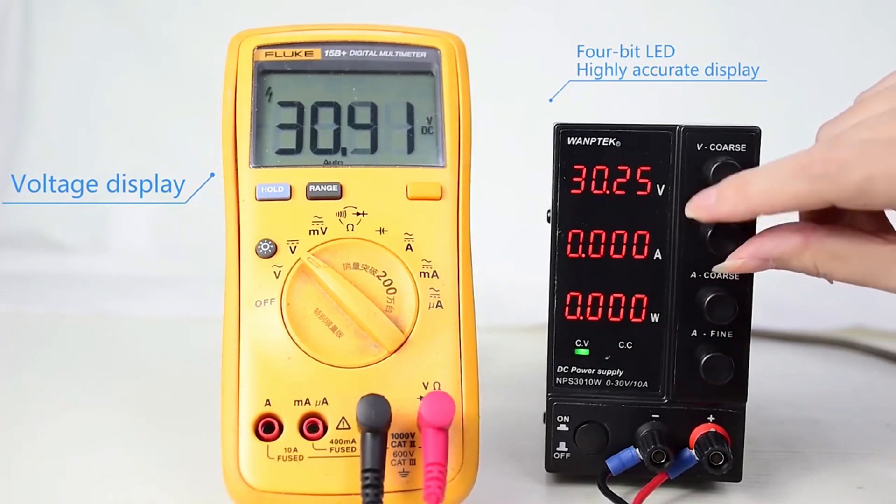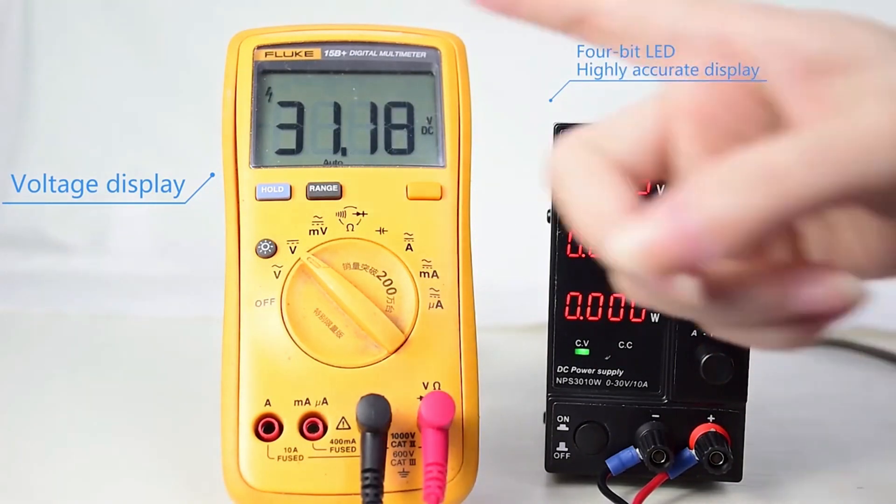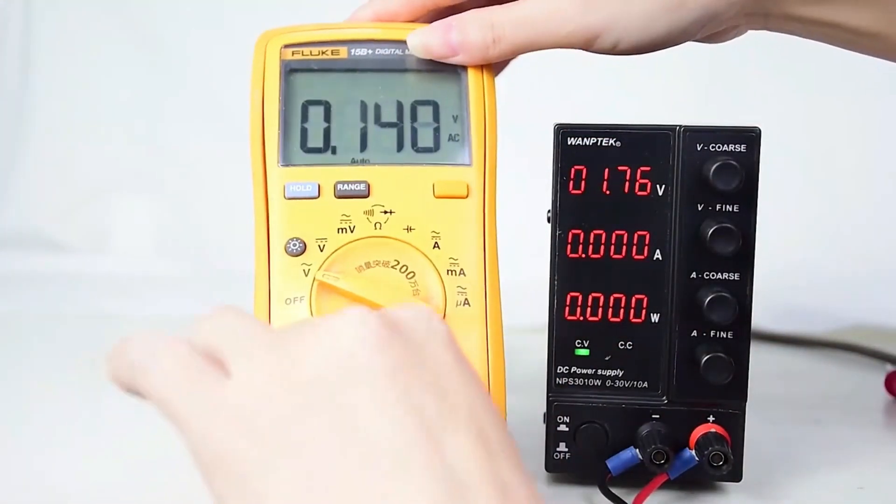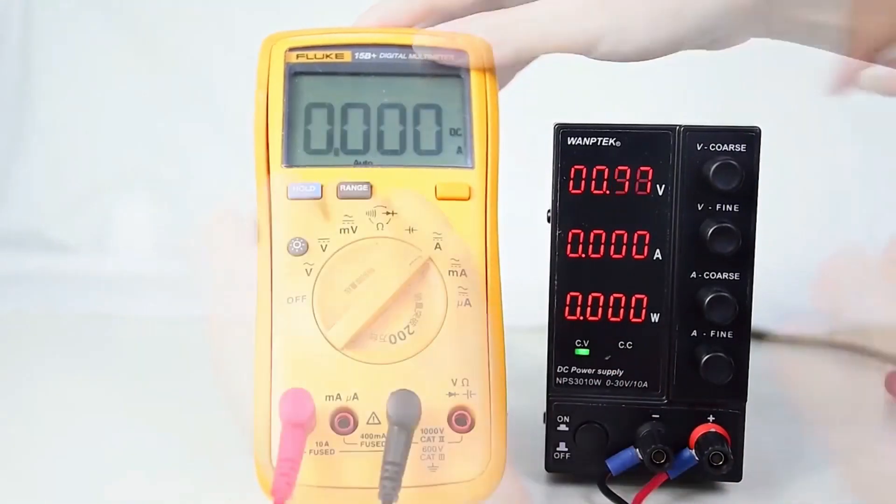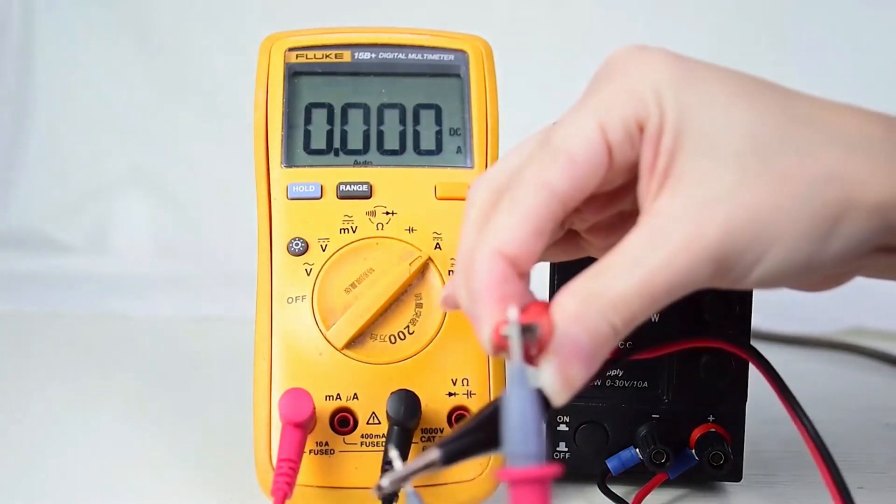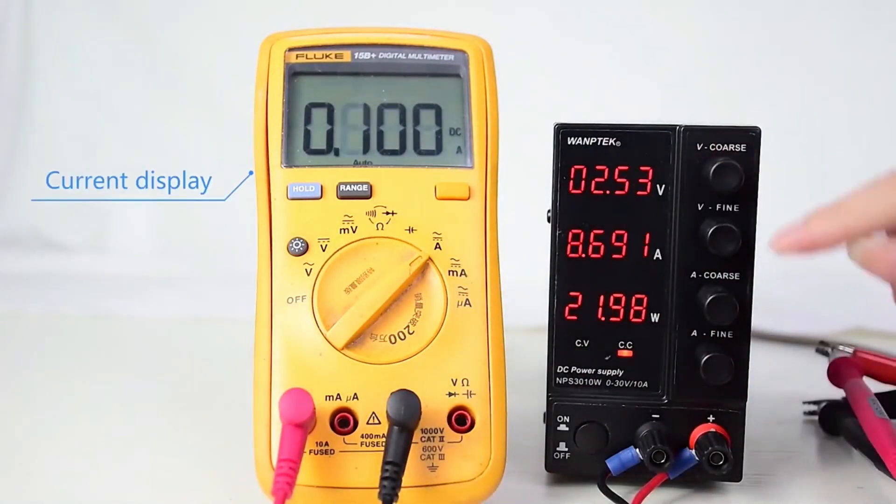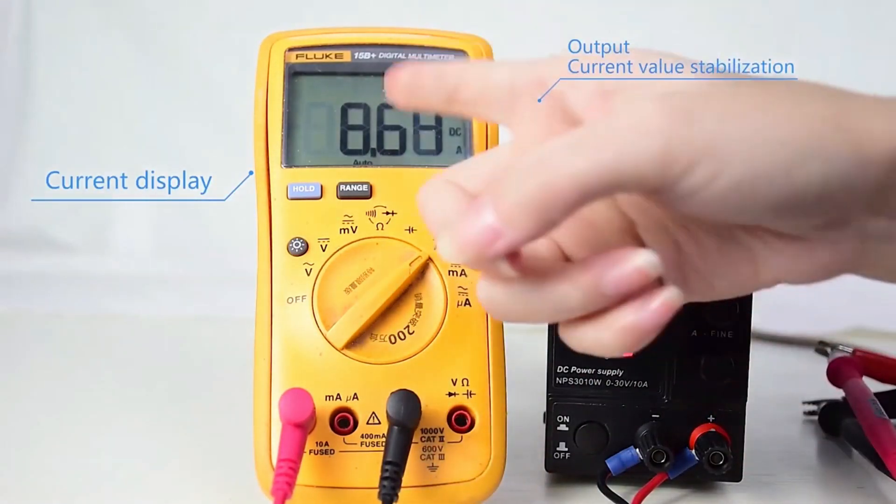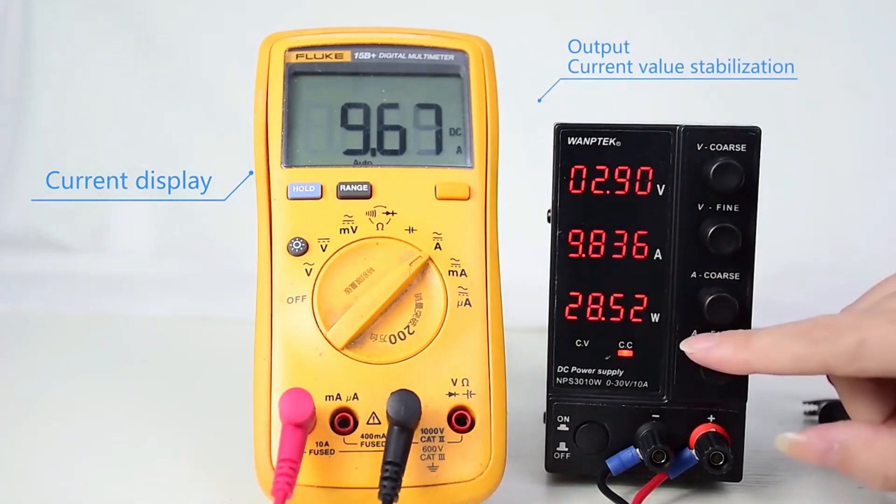The versatile output voltage range from 0 to 30V and variable output current from 0 to 10A ensure precise current delivery without damaging devices. The NPS 306 voltage stability is impressive, with an accuracy of 0.1% plus 3mV and load stability of 0.2% plus 3mV.